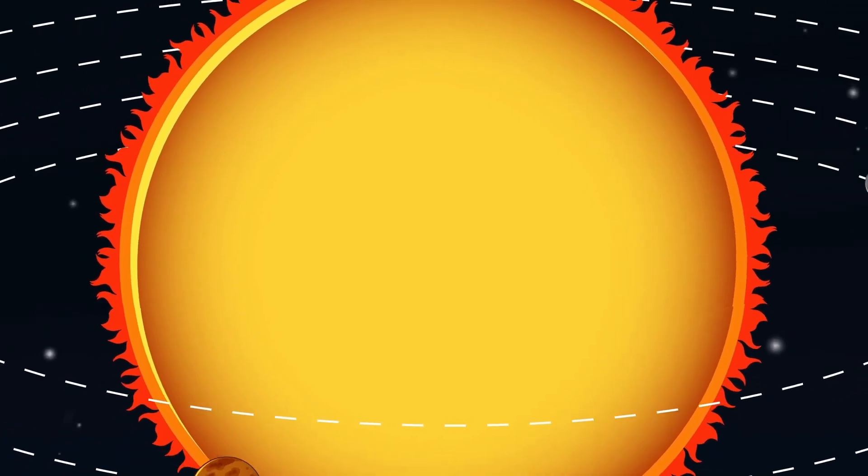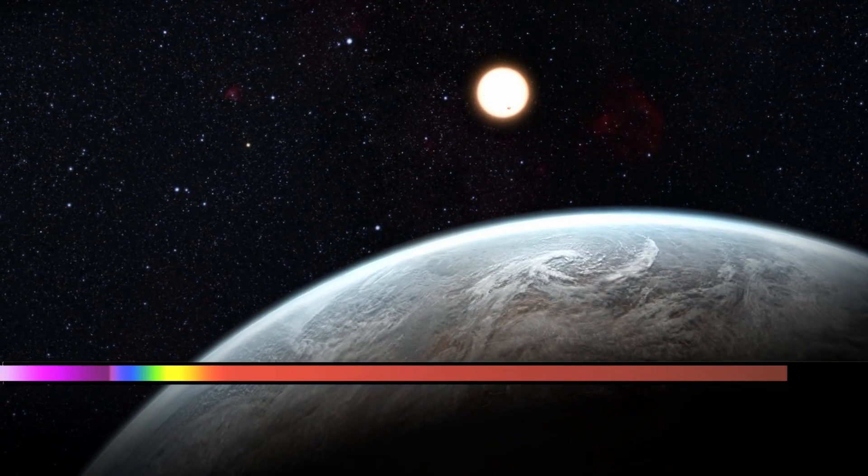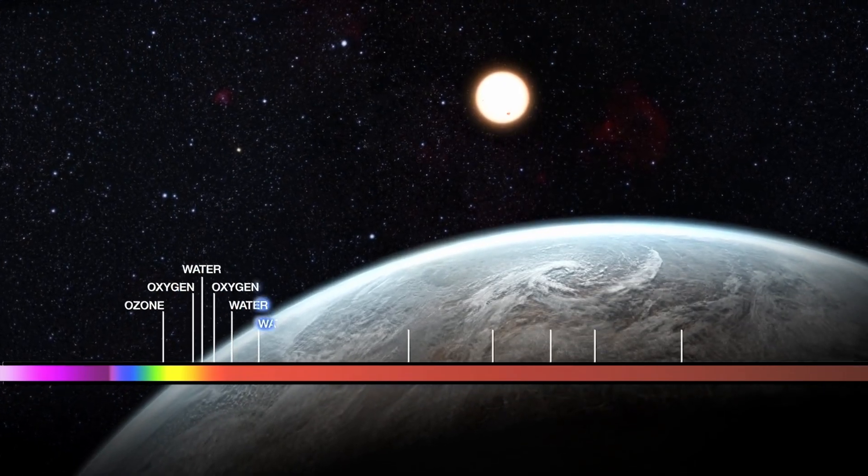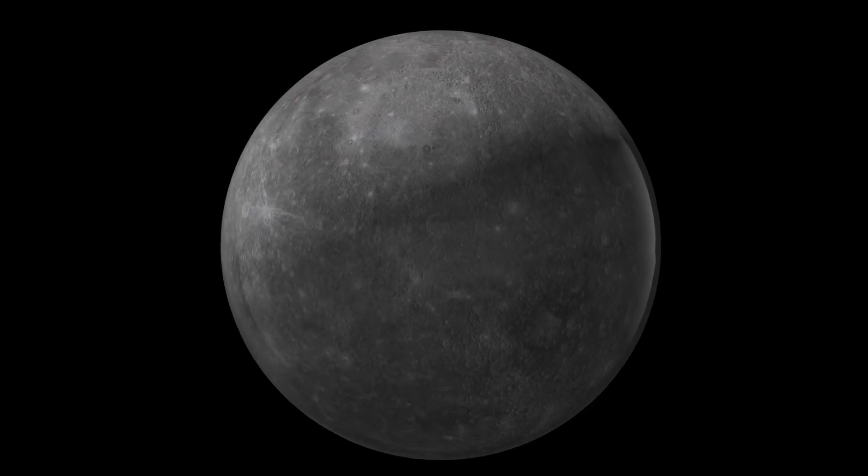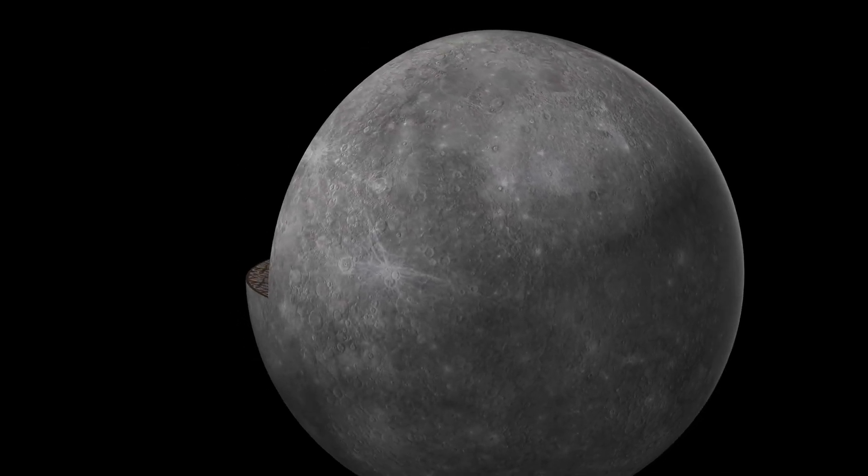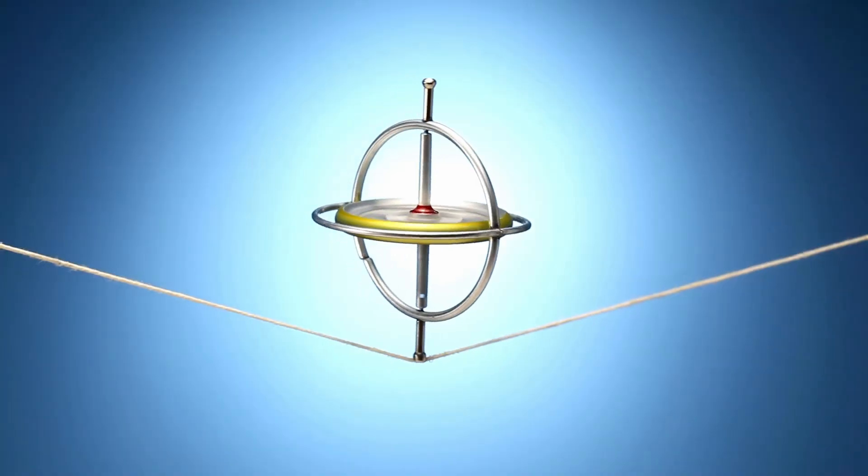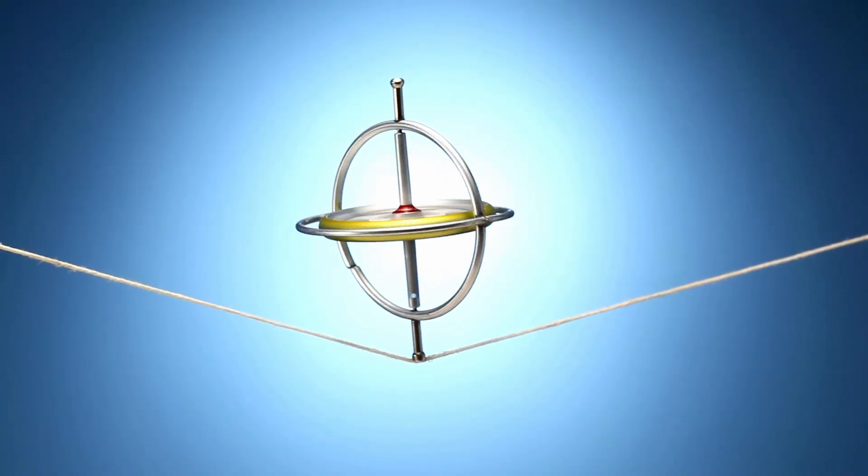This isn't a rock from interstellar space. This is something built, and it's almost here. Let me explain how the entire scientific community miscalculated something this massive by such an enormous margin. When we first detected Atlas, it was still beyond Neptune's orbit.